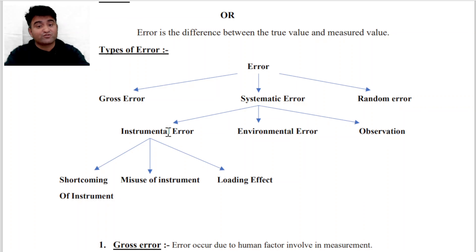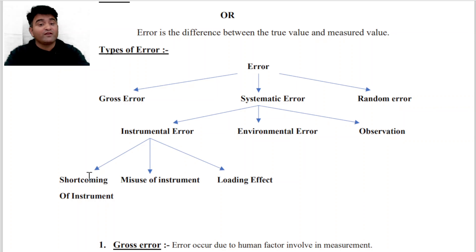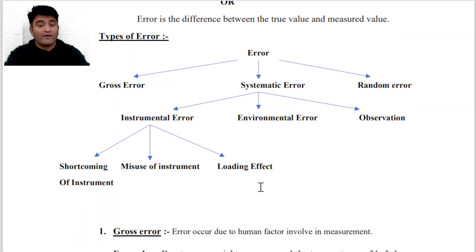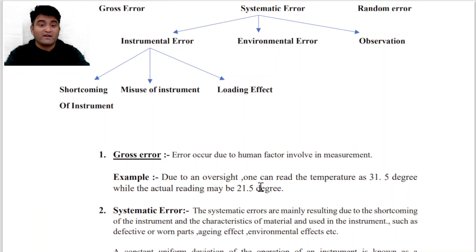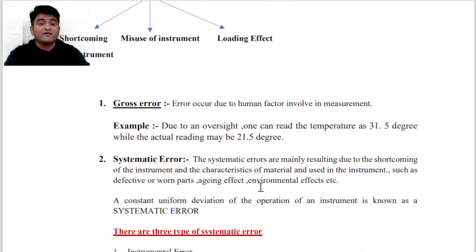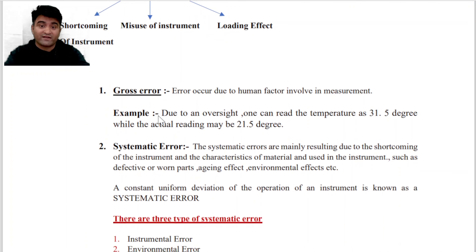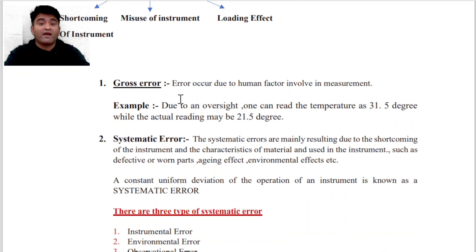आगे हम पढ़ेंगे Types of Error. There are three types of Error: Gross Error, Systematic Error, and Random Error. Systematic Error भी तीन परकार के होते हैं: Instrumental Error, Environmental Error, and Observational Error. And Instrumental Error भी तीन परकार के होते हैं: Shortcoming of Instrument, Misuse of Instrument, and Loading Effect.